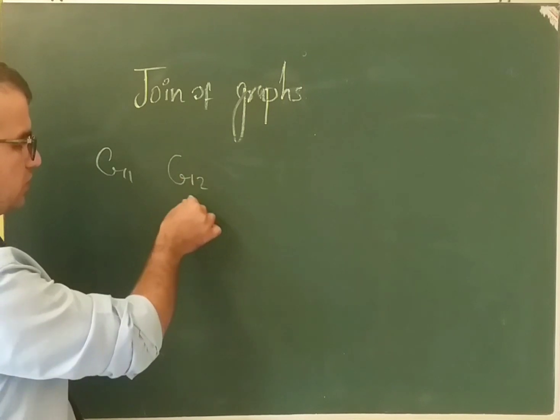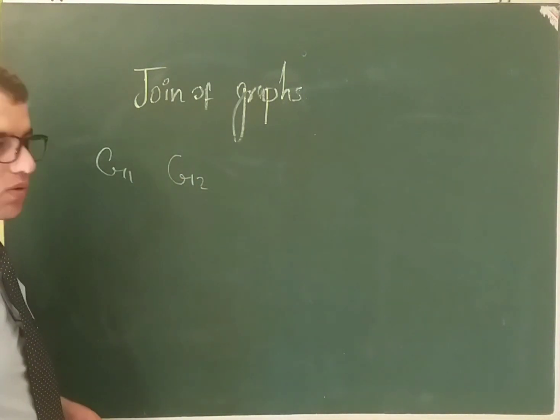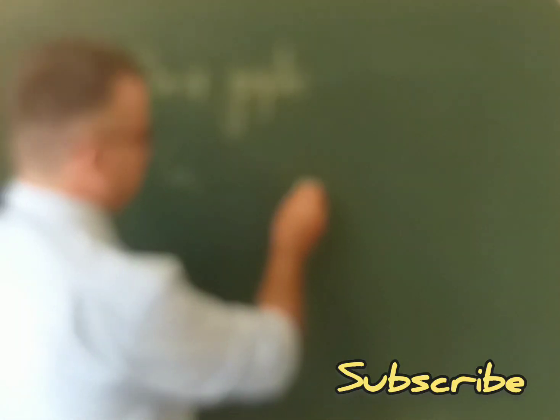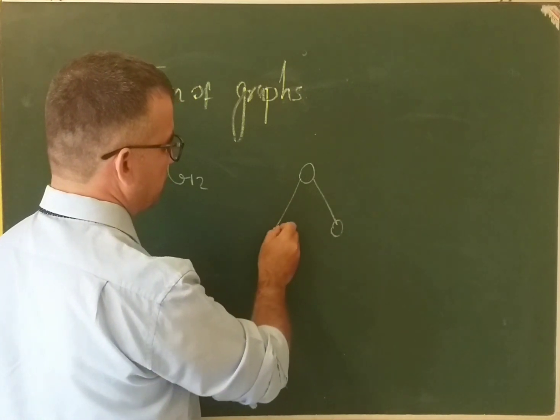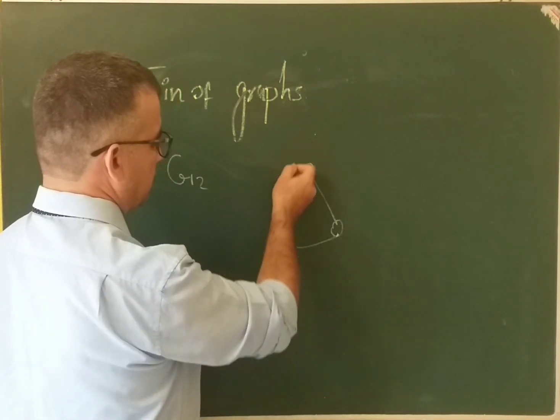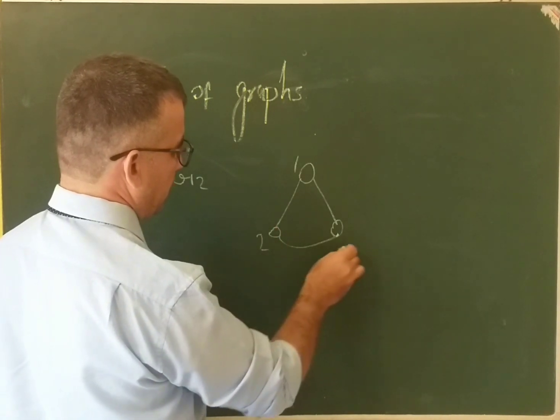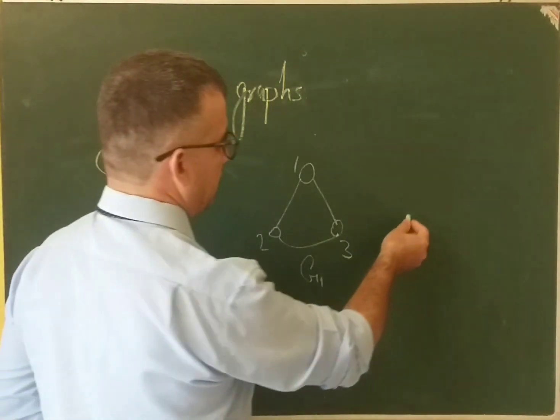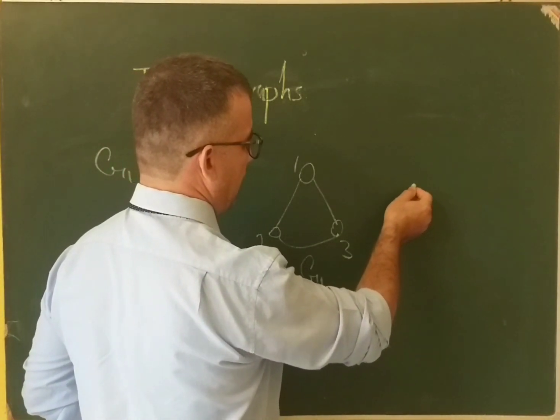Let me have an example here. Suppose I have this graph G1 with vertex number one, two, and three. This is graph G1. And also graph G2, and we have the graph G2.